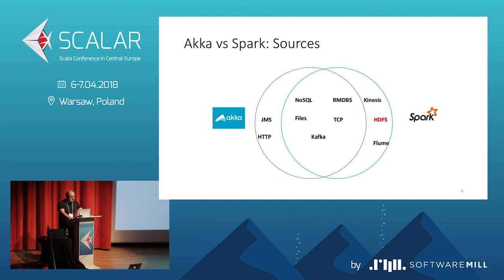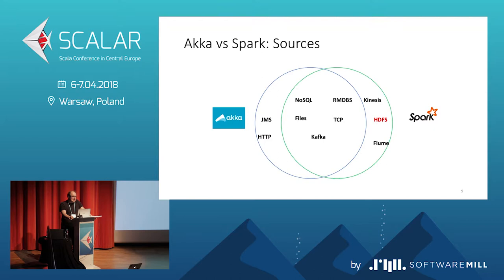Now that we know we'll be doing ingestion in Spark or Akka, let's see what sources and sinks they can both handle. In the middle of the graph you can see what both Spark and Akka support — quite a lot: relational databases, files, TCP, Kafka, and so on. If your source and sink land in that area, you can choose either one based on other criteria. The one huge difference: Spark handles HDFS especially well as a landing area, whereas Akka has very little HDFS integration. So if data must be stored in HDFS, your stack should lean toward Spark. Akka, on the other hand, has great HTTP and JMS integration that Spark lacks.